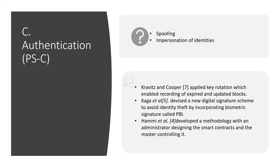The next security concern is authentication. Due to remote resource limitations, sophisticated mechanisms cannot be applicable to IoT applications of centralized systems. Hence, blockchain technology uses private and public key pairs for identities and authentication. Some proposed techniques include Kravitz and Cooper, who applied key rotation enabling recording of expired and updated blocks. Kaga devised a new digital signature scheme to avoid identity theft by incorporating a biometric signature called PBI. The latest research by Hami discusses a methodology with an administrator designing smart contracts and a master controlling it.